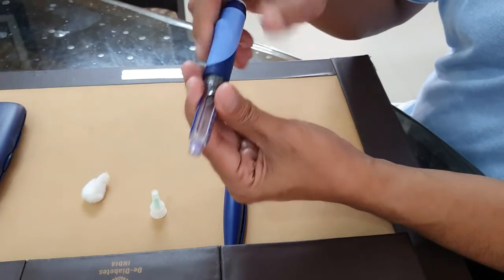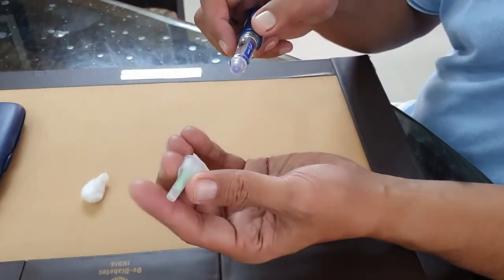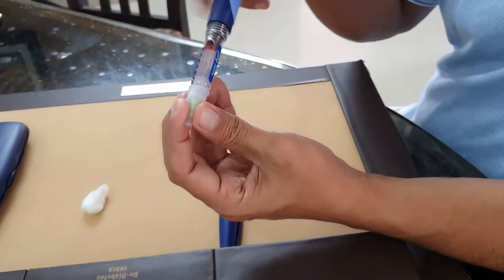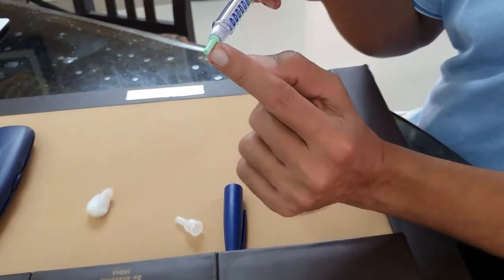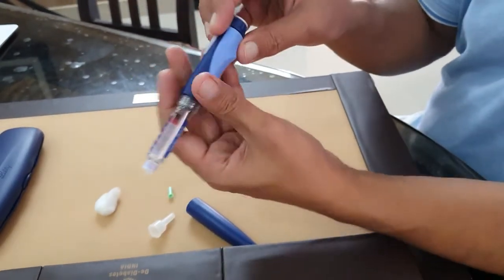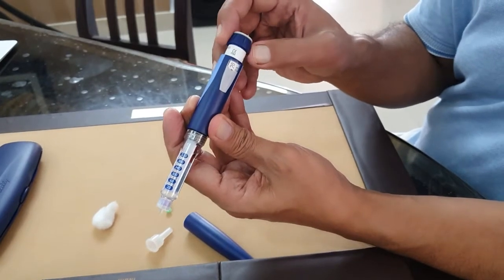After that you take the pen needle and put it like that. Once you put it, remove the cap. Inside that you can see one more small needle cap - remove that.